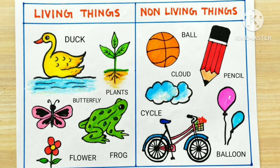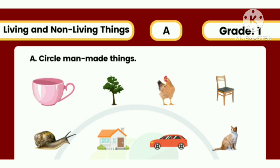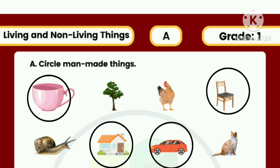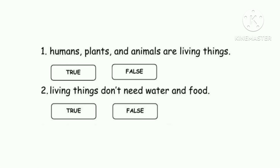More non-living things: pencil, cycle, balloon. Man-made things — what are man-made things? Mug, house, car, chair — these are made by man, so these are man-made things. Next, we are going to see true or false. Humans, plants, and animals are living things.